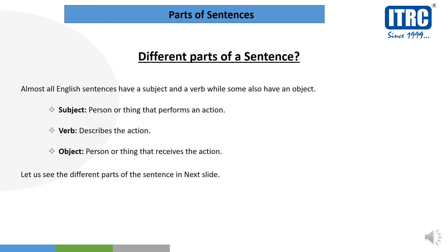Now we will see the different parts of a sentence. We said that a sentence has a subject and a predicate. The subject is the person or thing that performs an action. The verb tells you which action is being performed. The object is the person or thing that receives the action — whoever or whatever is receiving the action is called the object. The verb describes what action is taking place.